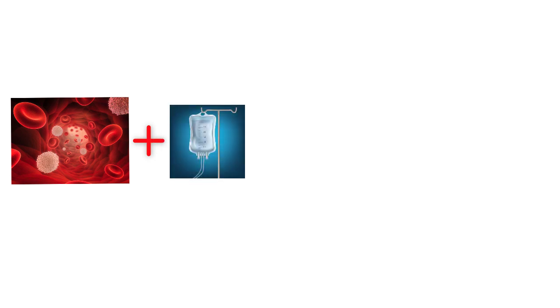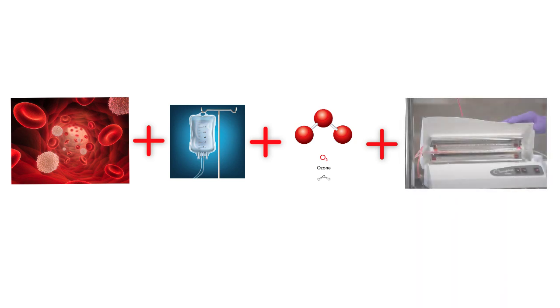So how UBI ozone IVs work is that we take out some blood and then we add that blood to some saline. And then we add ozone to that saline blood mixture. And then we drip that blood back to the patient.